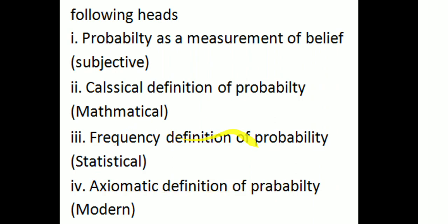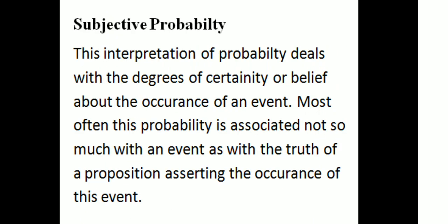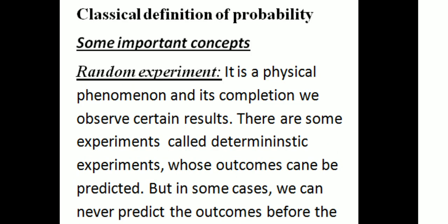The subjective interpretation of probability deals with the degree of uncertainty or belief about the occurrence of an event. Most often, this probability is associated not so much with an event as with the truth of a proposition asserting the occurrence of that event. Then we come to the classical definition of probability.